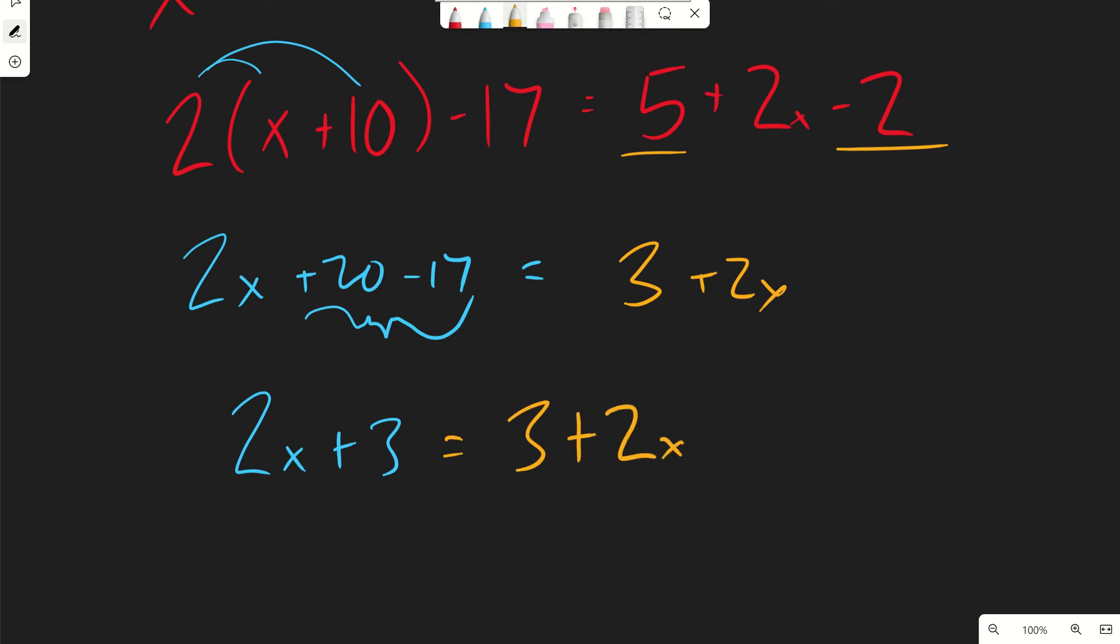Okay, so simplify both sides down. Now, we're going to minus 2x, right? Variables on both sides. Get them to one side. Minus 2x. You can come over here and minus 2x, and that's going to cancel that one out too. And we're left with 3 equals 3. Well, we're left with 3 equals 3.